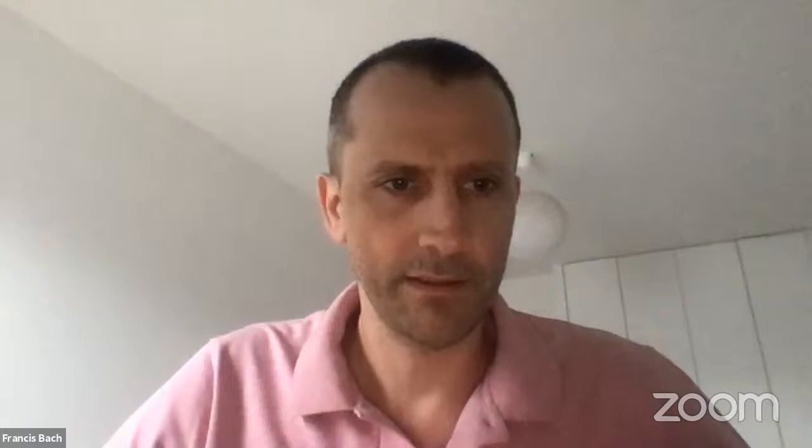He received the ICML Test of Time Award in 2014 and the Lagrange Prize in continuous optimization in 2018. He also won the Blaise Pascal Prize in 2019, and recently in 2020 he was elected at the French Academy of Sciences. He has won many more awards than this. Now the stage is yours, Francis.